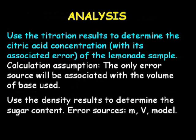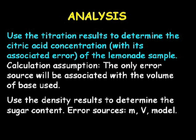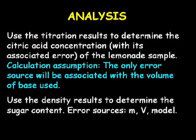When analysing your data, you will need to use the stoichiometric reaction between citric acid and sodium hydroxide, which has been given to you in the lab manual. Using this, and knowing the volume of acid used, the concentration of the base, and the volume of base required, you will be able to calculate the concentration of citric acid along with its associated error. Note that in this calculation you may assume that the only quantity that has any error associated with it is the volume of base.